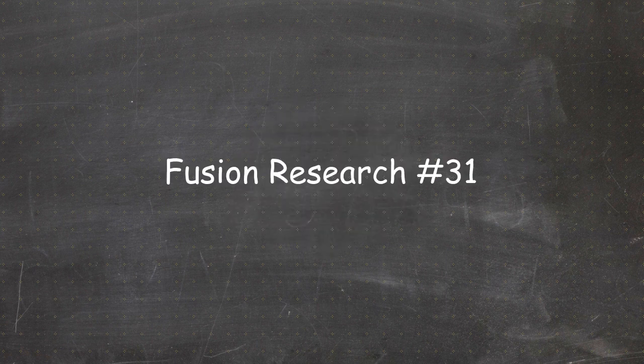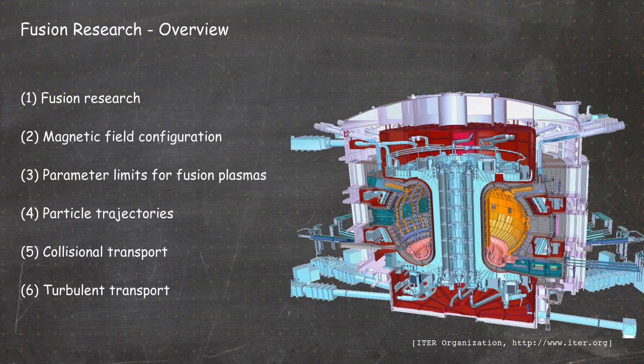Hello everybody and welcome to video number 31 of the online version of the Fusion Research Lecture. We are in Chapter 6, Turbulent Transport. In the last video we started to talk about turbulence in neutral fluids and introduced the Navier-Stokes equation. In this video we will look at the dimensionless form of the Navier-Stokes equation because this can be very helpful for our purposes.